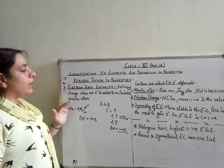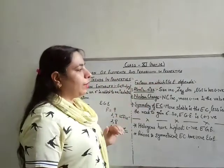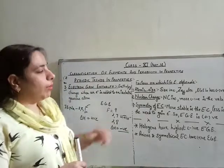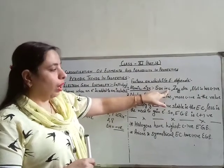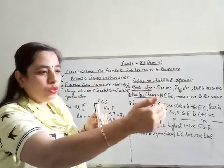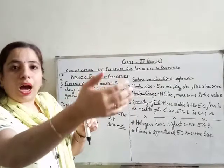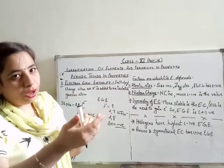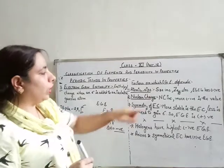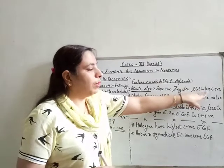So both ionization enthalpy and electron gain enthalpy are opposite to each other. Electron gain enthalpy depends on atomic size. If the atomic size is larger, the outer shell is farther from the nucleus, the effective nuclear charge experienced is less, attraction on the incoming electron is weaker, energy released is less, and electron gain enthalpy value will be less negative.